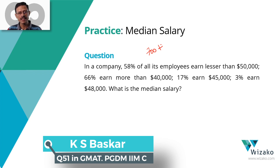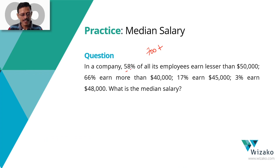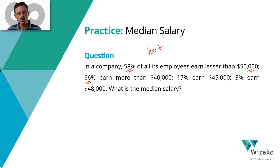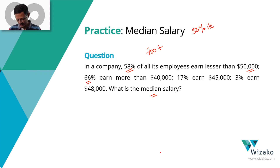We need to find out the median salary for the employees of a company. Let's quickly read the information given to us. In a company, 58% of its employees earn less than $50,000. 66% of its employees earn more than $40,000. 17% earn $45,000. 3% earn $48,000. Let's plot this information in a schematic so that we're able to see the data a lot better. Let's get started.